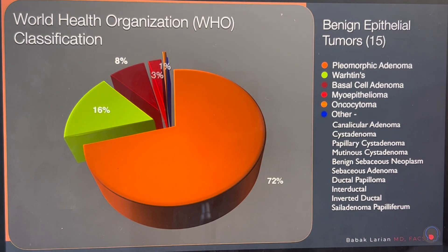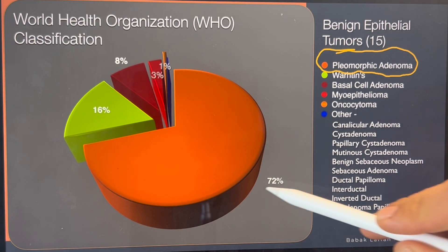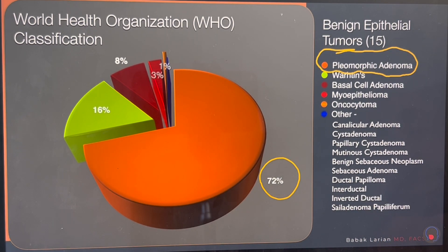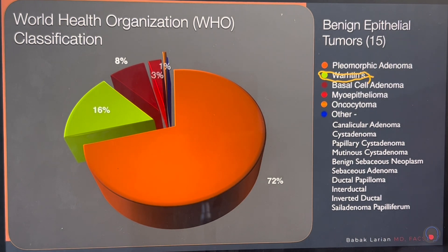Tumors recur for a variety of reasons. There are 15 different types of benign tumors that happen in the salivary glands. Pleomorphic adenoma is the most common type at 72%. But there are other types, and all of them have their own different personalities. For example, Warthin's tumor tends to happen more often in smokers and tends to be multiple — you can get one or two on each side, or even more, and on both sides at the same time.